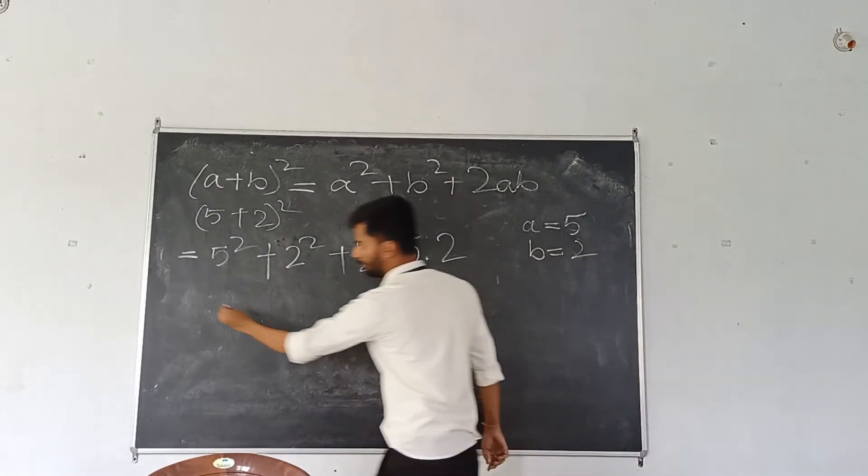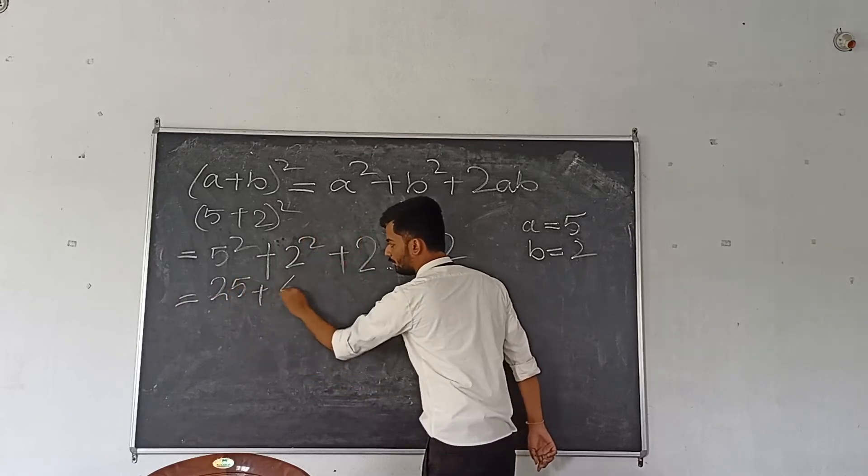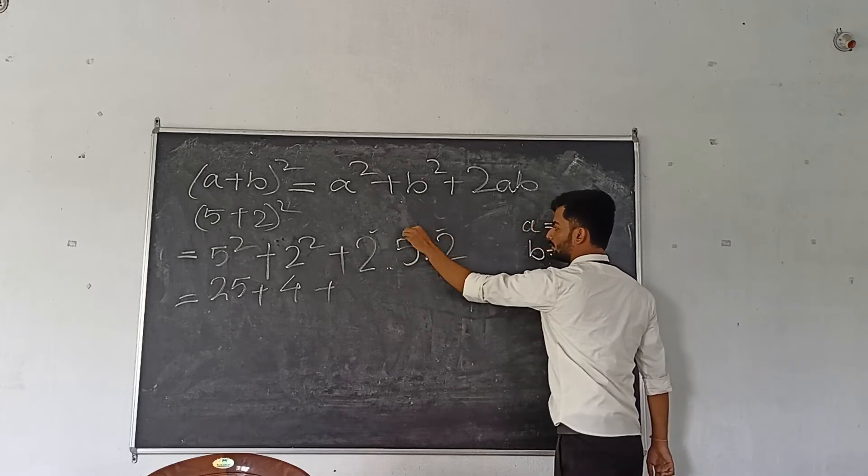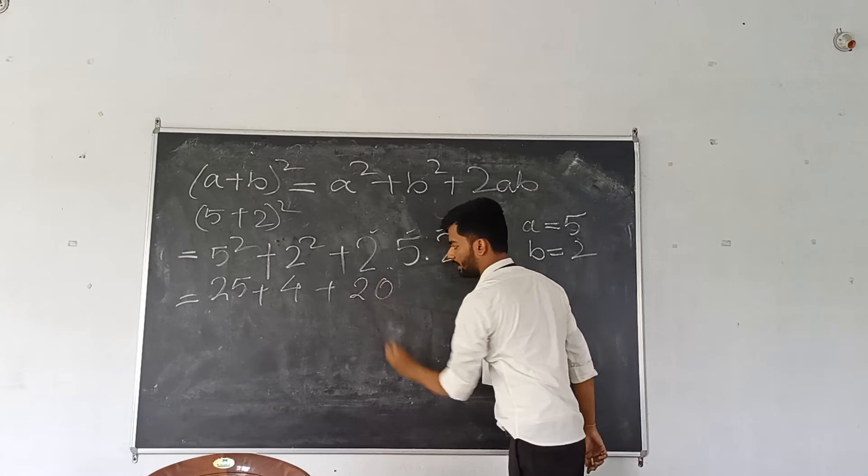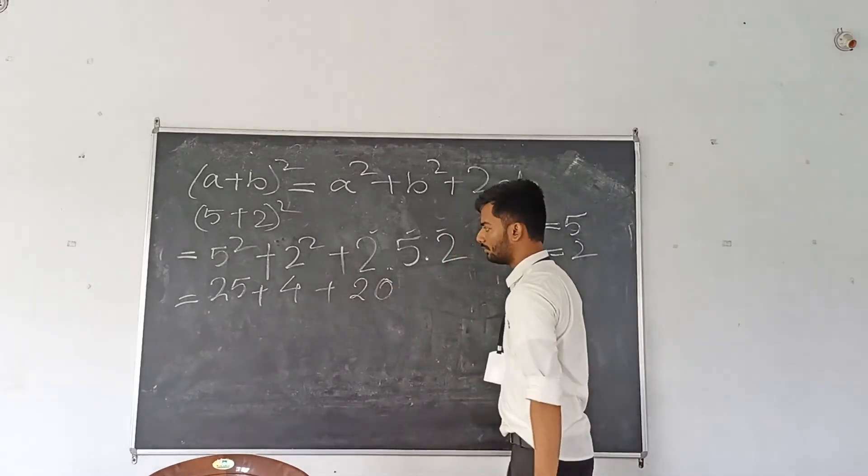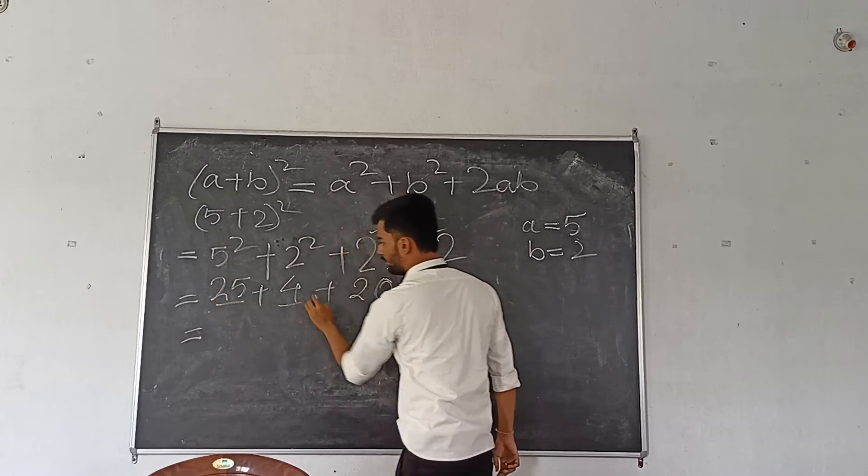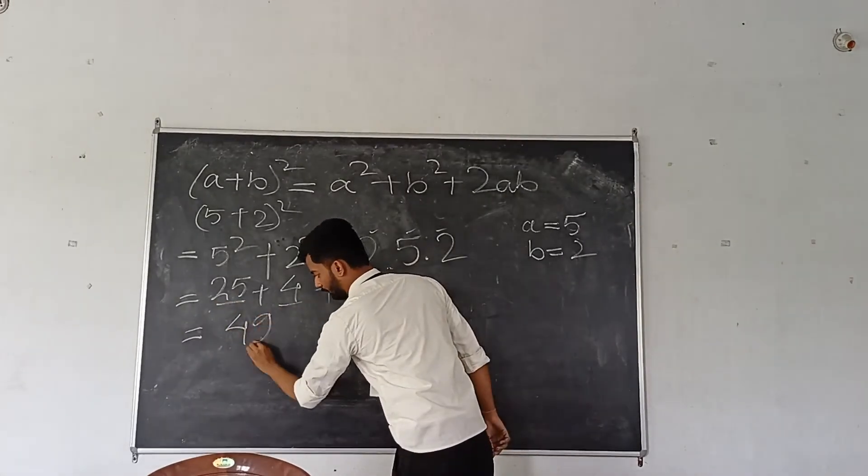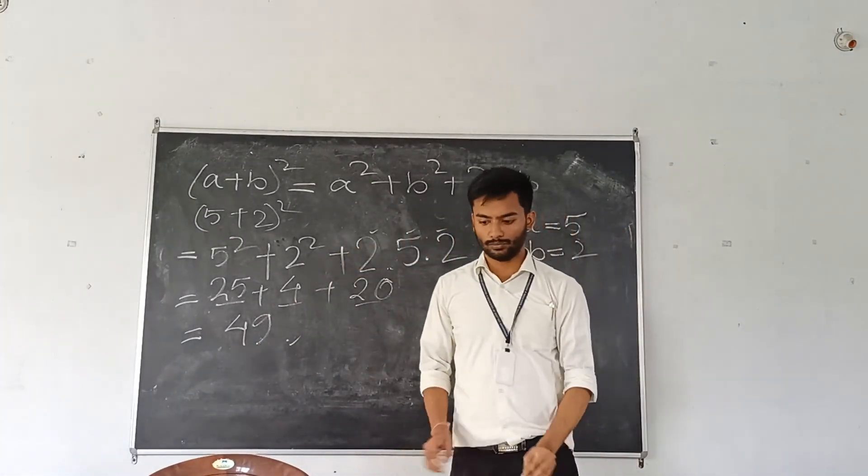Alright, now we calculate. I have 25 plus 4 plus 20. Now we will add these together. So it will be 25 plus 4 is 29, and then 29 plus 20 equals 49. 49 is your answer. Okay, thank you.